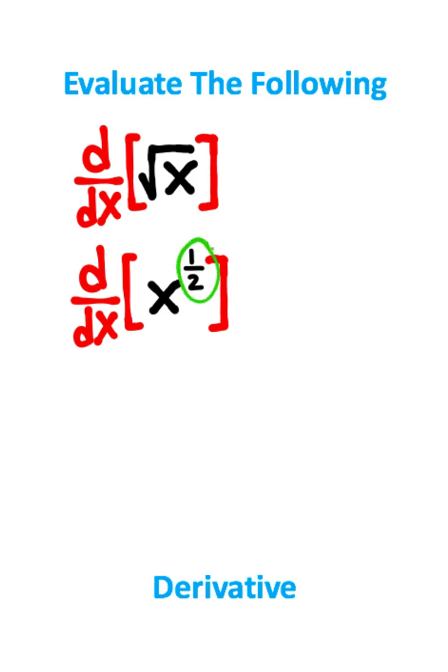You take your exponent or your power, you multiply it by the front of the variable, and then you subtract 1 from the exponent. This equals one-half x to the one-half minus 1. And one-half minus 1 is just negative one-half.